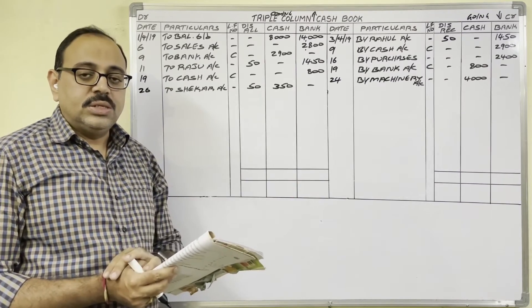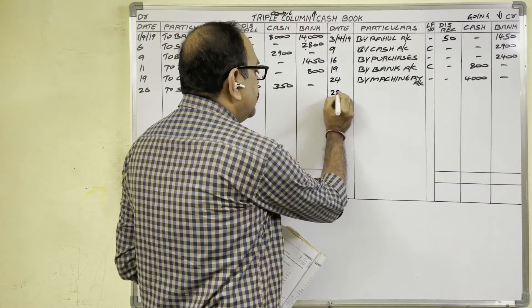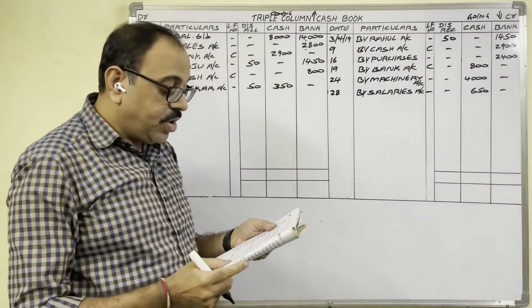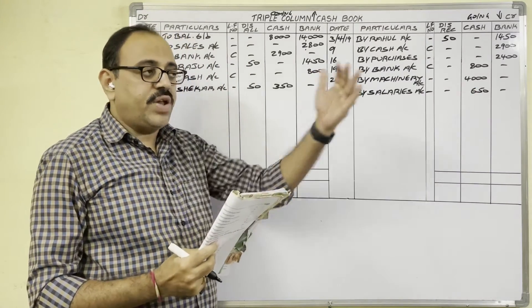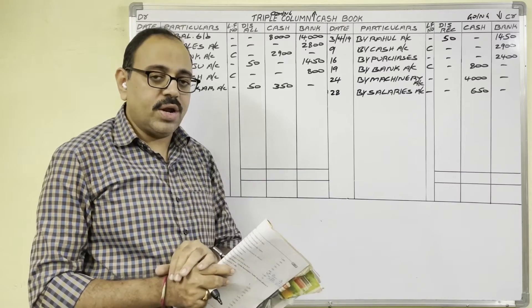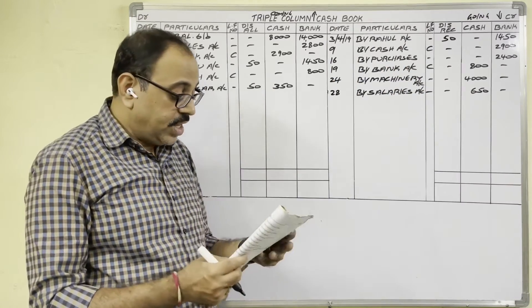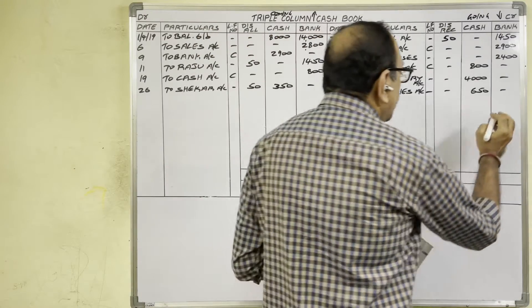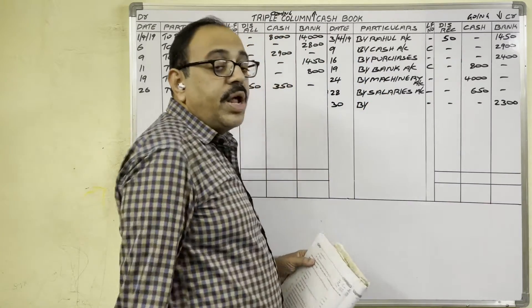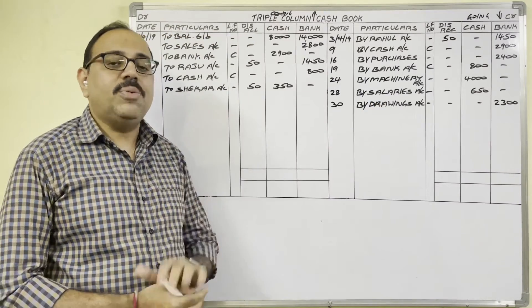28th April: Salaries — 650 rupees. The firm paid salaries to employees; cash is going out, so on the credit side we write: 28th date, By Salaries Account, 650 rupees in the cash column. Cash withdrawn from bank for personal use — 2,300 rupees. The owner withdrew money from the bank for personal use. Cash is not coming into the firm, so this is not a contra entry. From the bank, cash is going out — bank balance decreases, so credit side bank column. In the particulars column write 'By Drawings Account'.